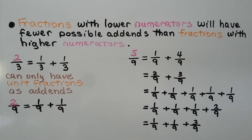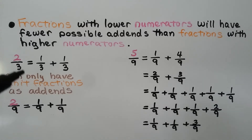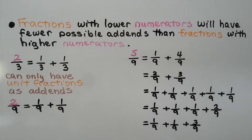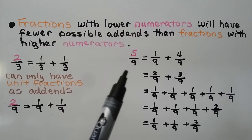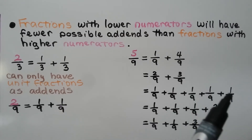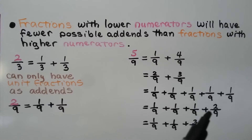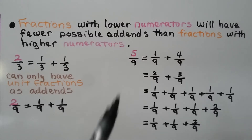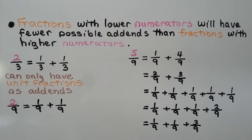Fractions with lower numerators will have fewer possible addends than fractions with higher numerators. For 2 thirds, we can only write the 2 as a 1 and a 1. For 2 ninths, we can only write 1 ninth plus 1 ninth. 2 thirds can only have unit fractions as addends because the 2 is so small. But look at 5 ninths — we could break the 5 into a 1 and a 4, or a 2 and a 3, or even write 5 unit fractions, or 3 unit fractions and a 2 ninths, or 2 unit fractions and a 3 ninths. The 5 is a higher number, so it has more possible addends.